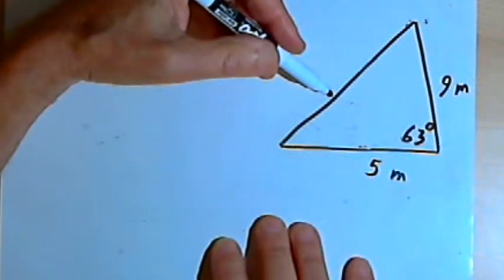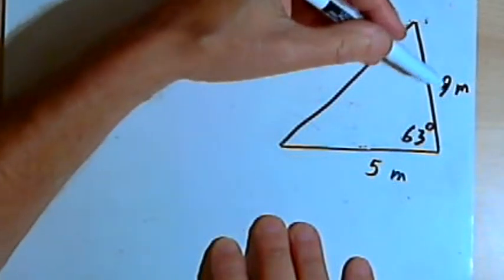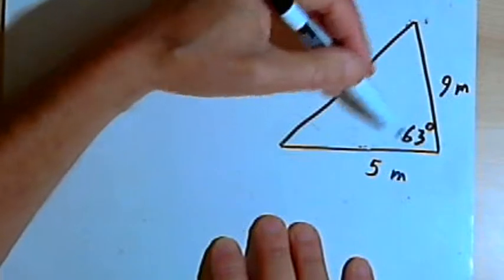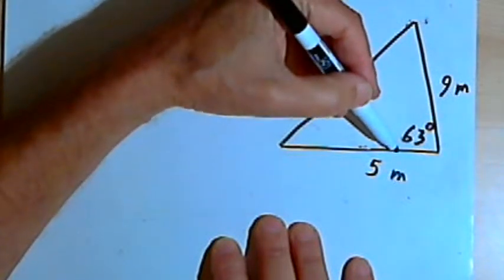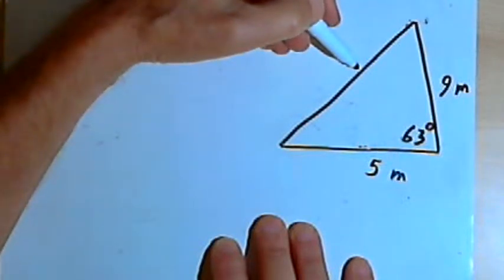We've got something called the law of cosines. The law of cosines says that if you know two sides of a triangle and you know the included angle, the angle in between those two sides, you can find the remaining side.